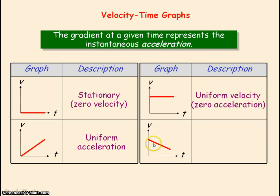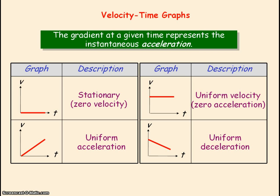For this case, you can see the gradient is constant but it's also negative. So we've got a negative but constant gradient, which implies a negative acceleration which is constant. A negative acceleration is a deceleration, so this is representing a constant deceleration. The velocity is decreasing at a constant rate.